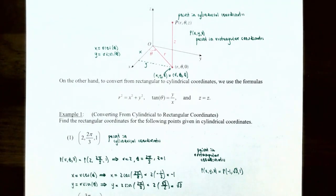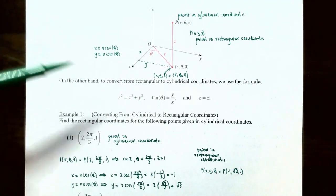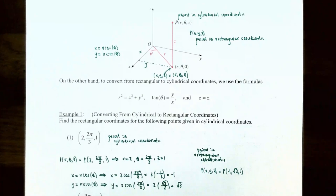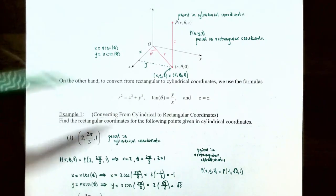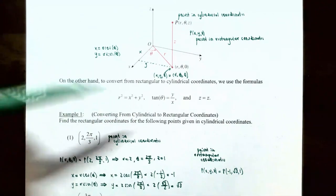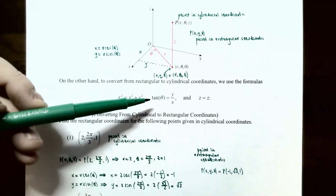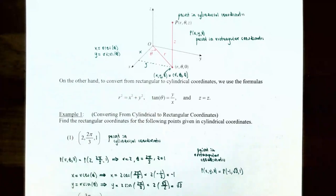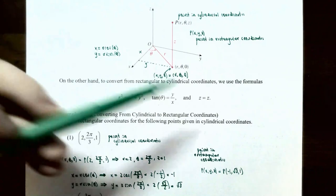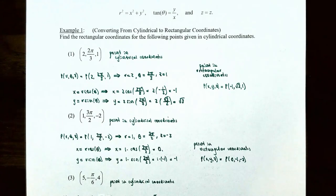To convert from rectangular coordinates to cylindrical coordinates, use these formulas: r squared equals x squared plus y squared — so if you know x and y you can solve for r. To find theta, use tangent of theta equals y divided by x, since you know x and y from rectangular coordinates. The z coordinate stays as z. Now let's try Example 1: converting from cylindrical to rectangular coordinates.